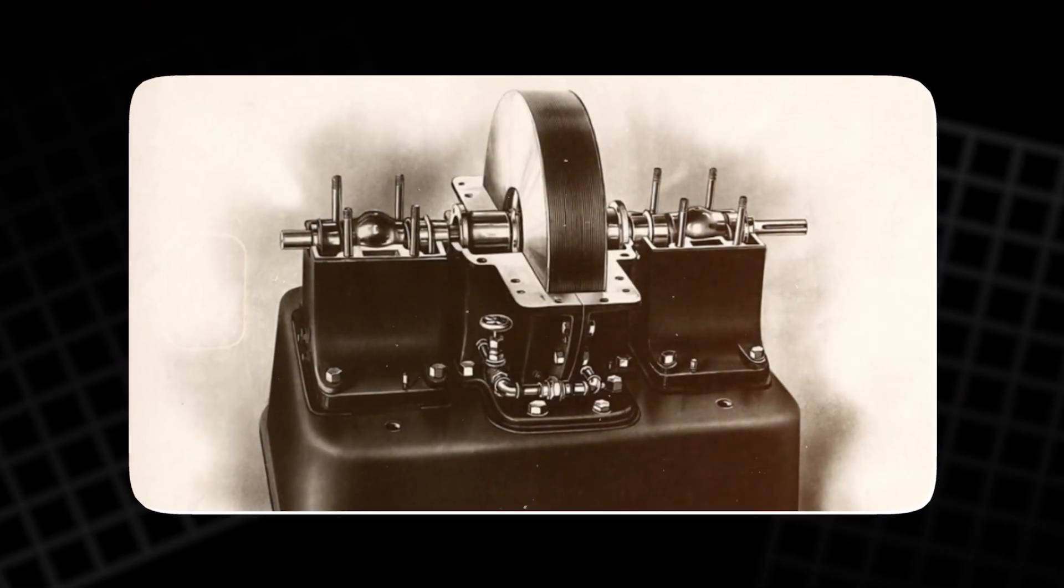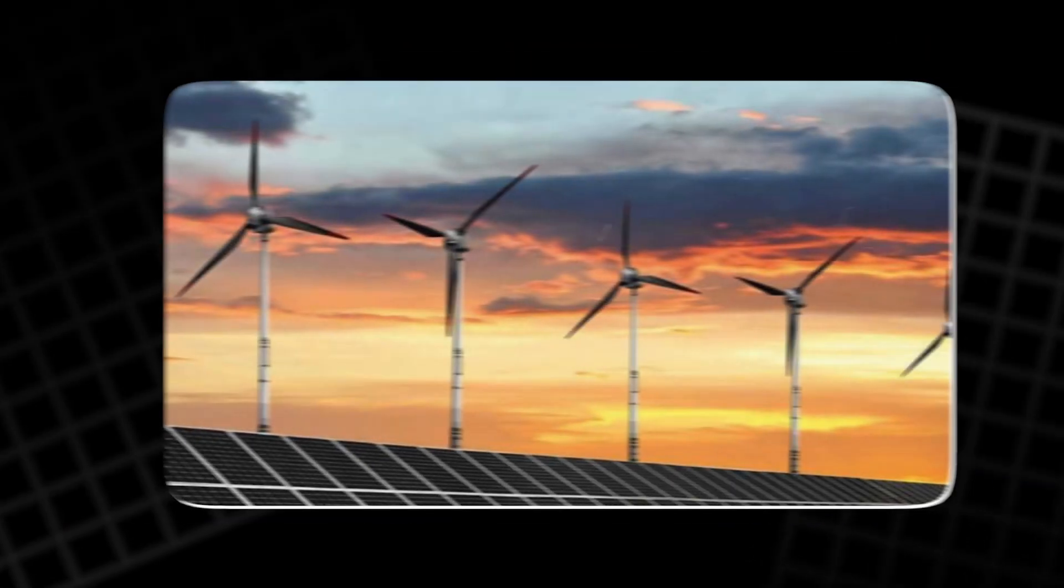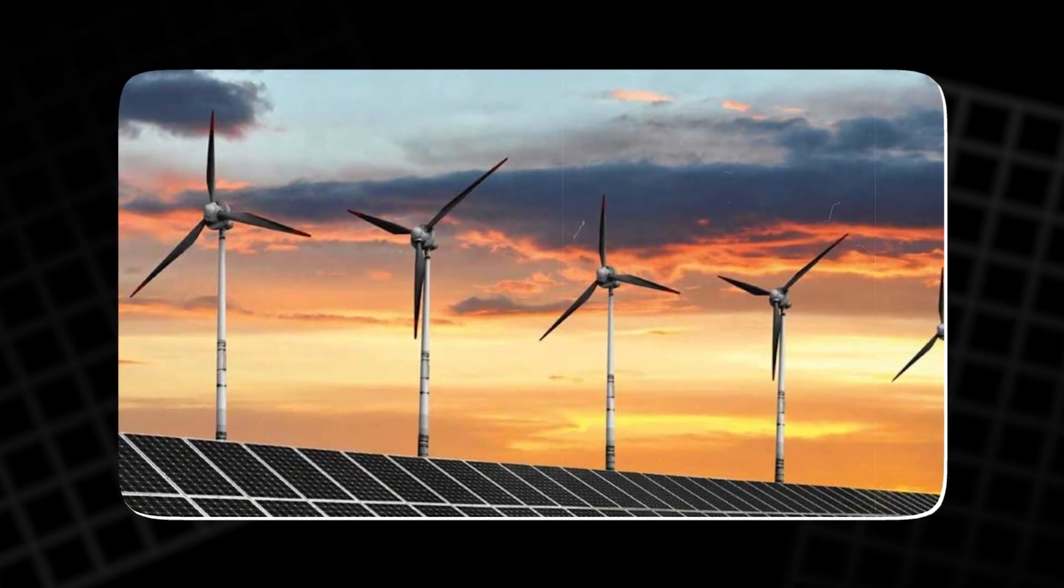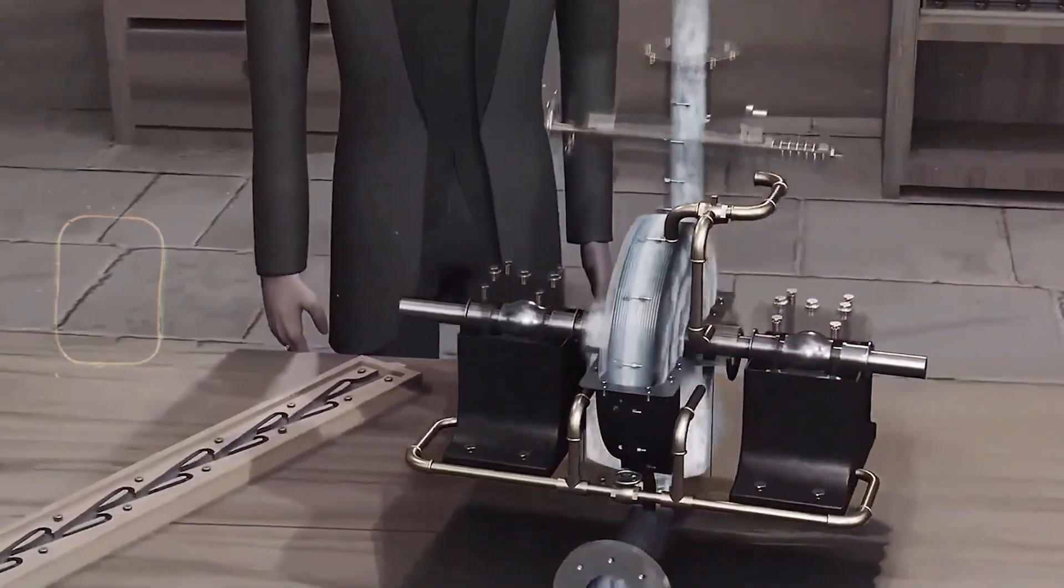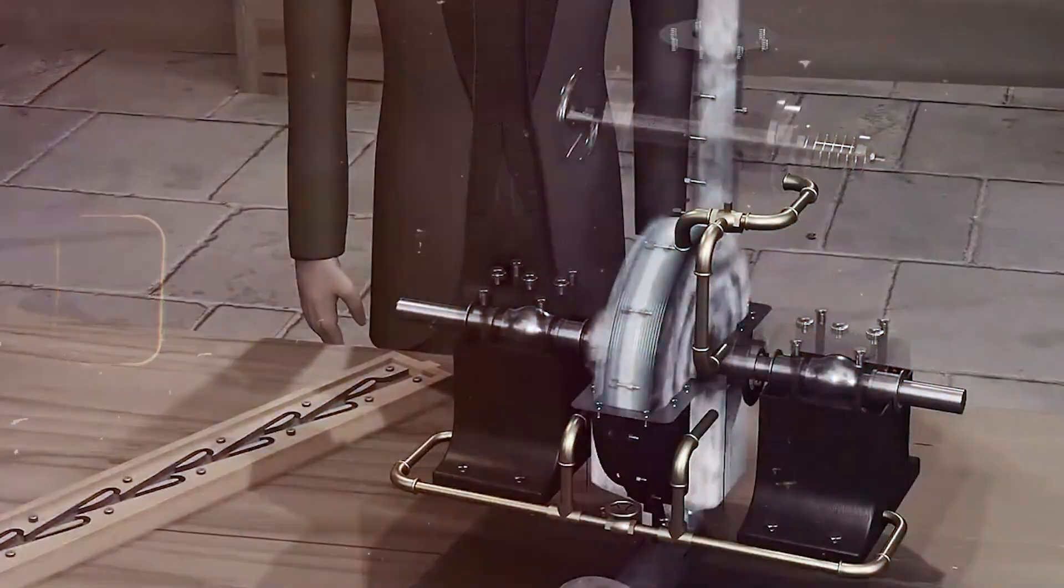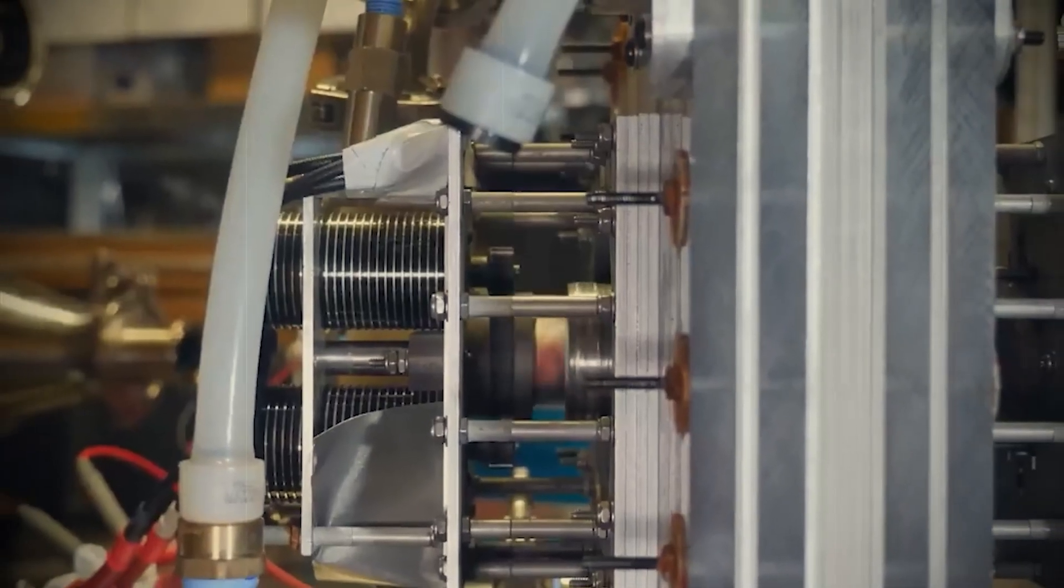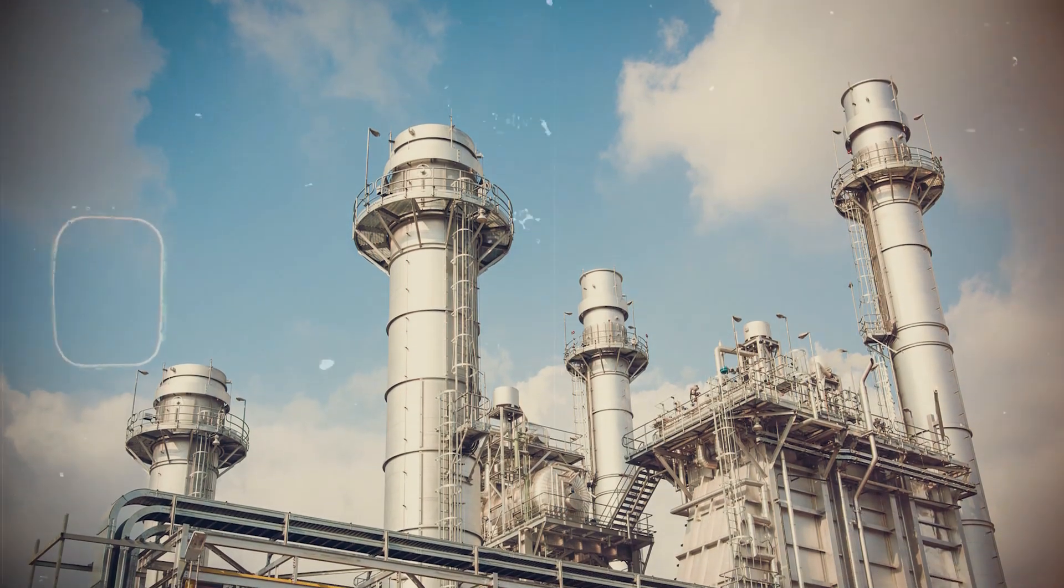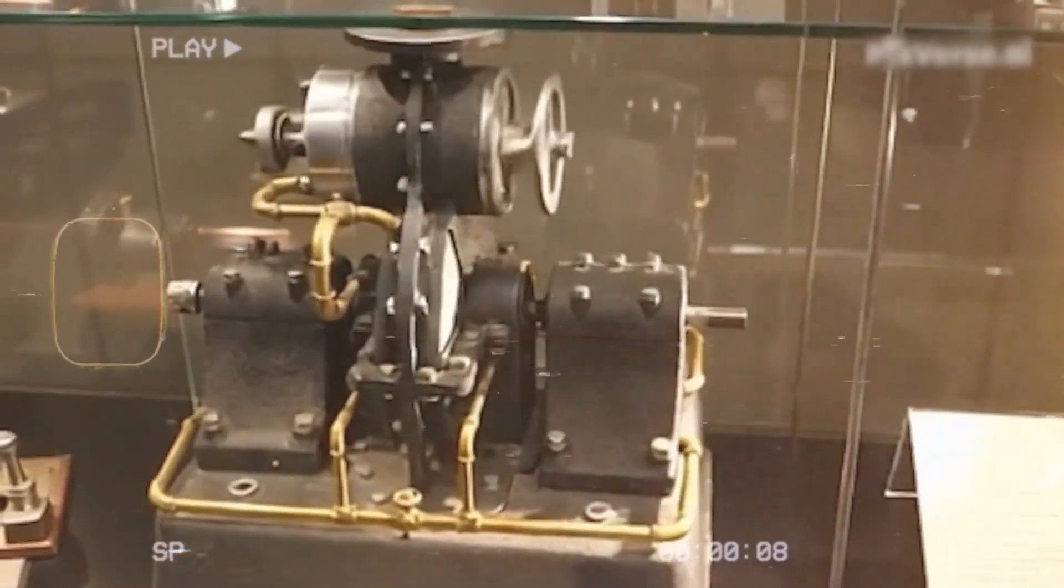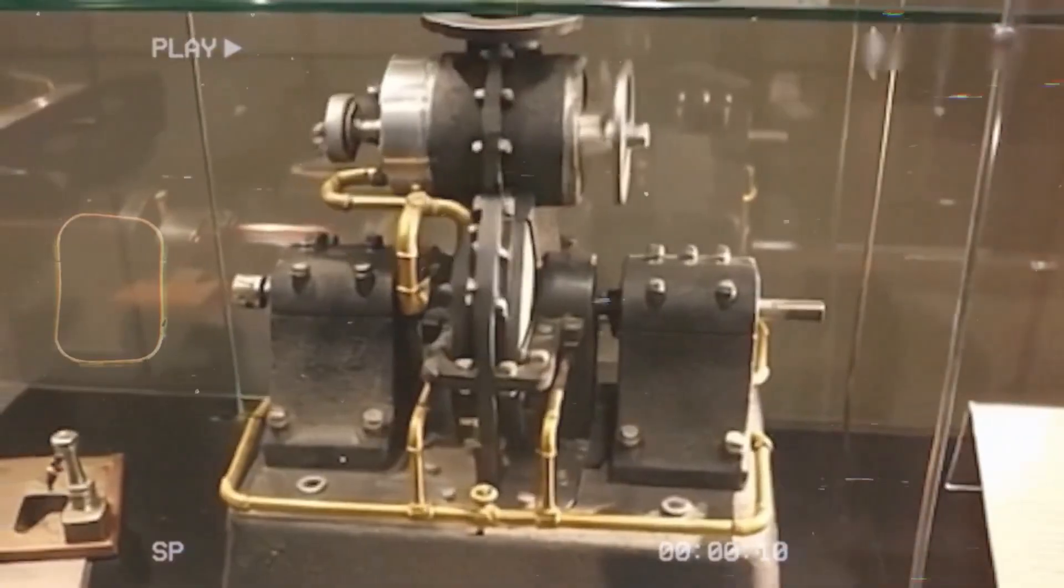In theory, this design could reach extremely high efficiency, perhaps even higher than conventional turbines. But there's a catch. In practice, the Tesla turbine produces high rotational speeds, but very little torque. That means it spins very fast, but doesn't push very hard. For industrial power generation, torque is what you need. So, most people dismissed Tesla's design as an elegant but impractical idea.